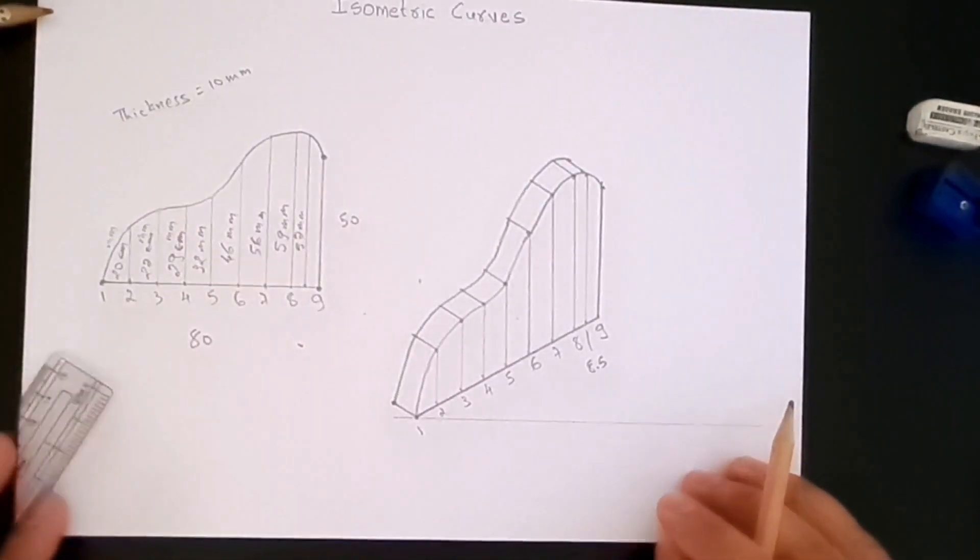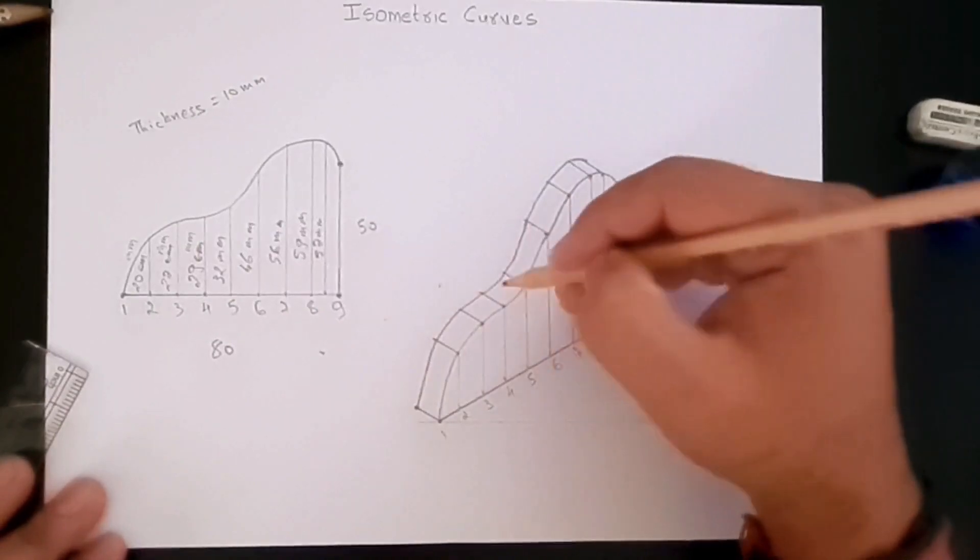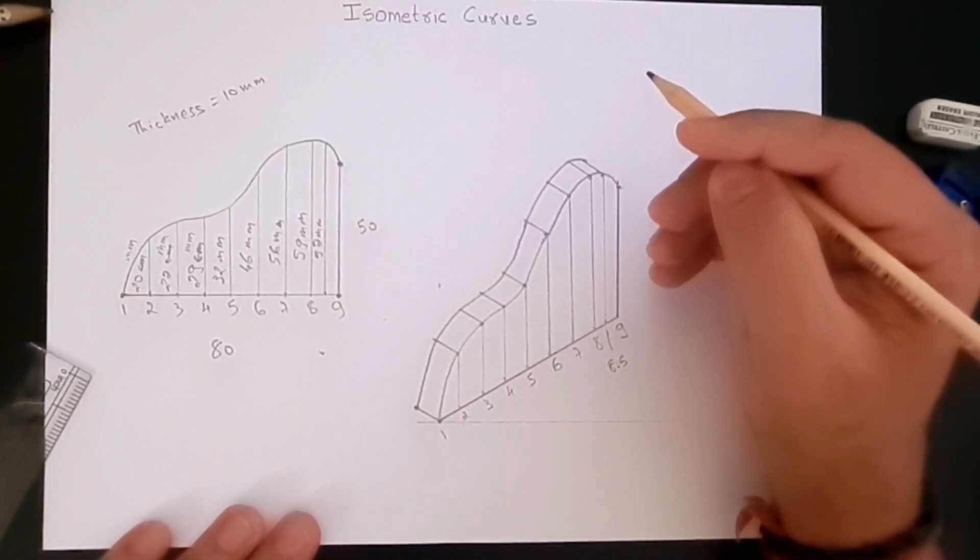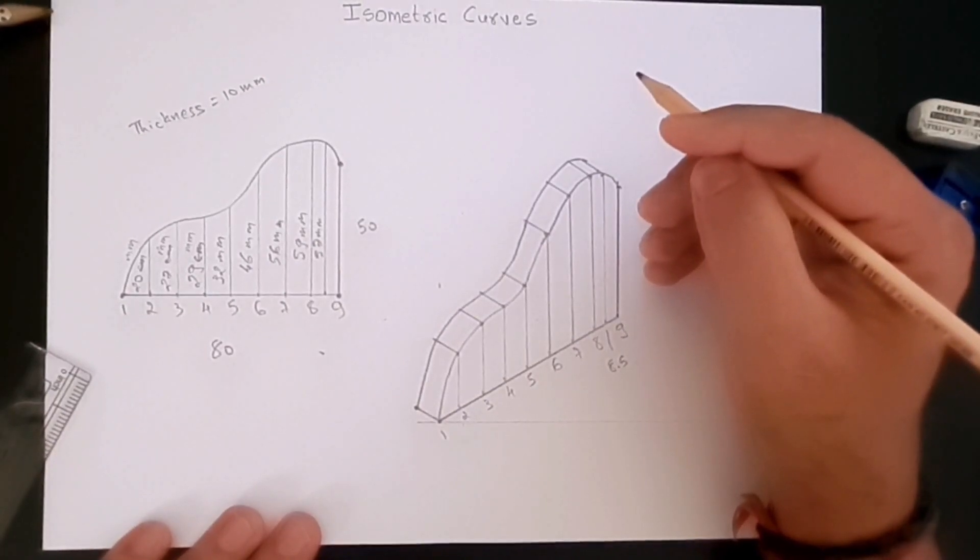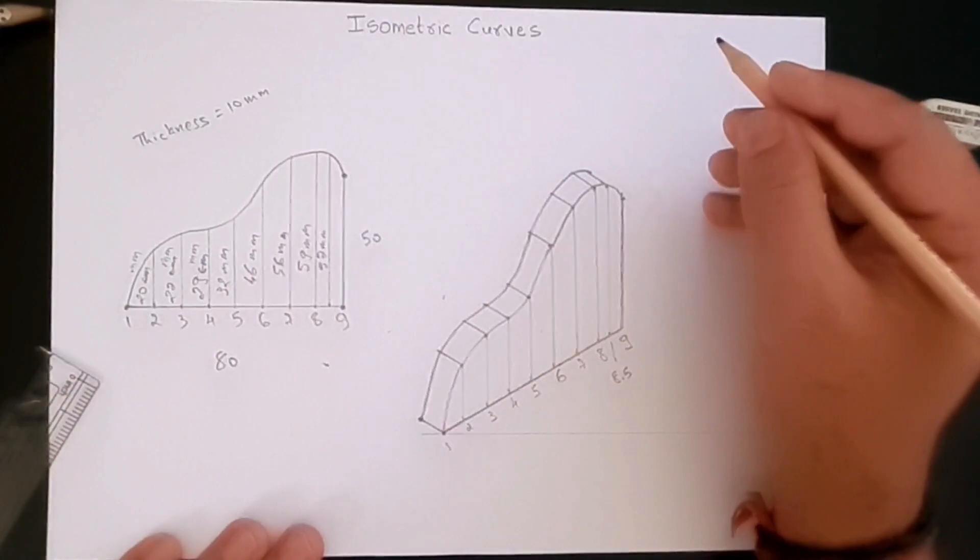So this is how you draw an isometric curve. If a thickness is standard or a constant thickness, then you can draw the part like this. That's the end of this video, and I'll see you in the next video.